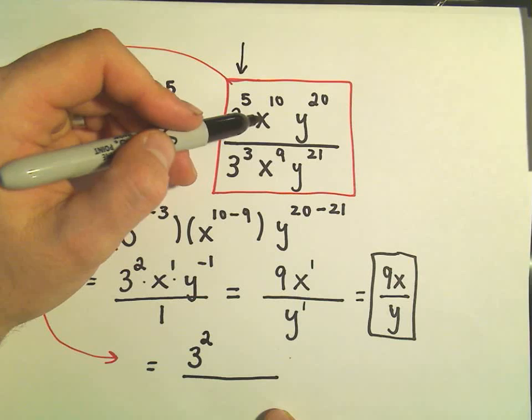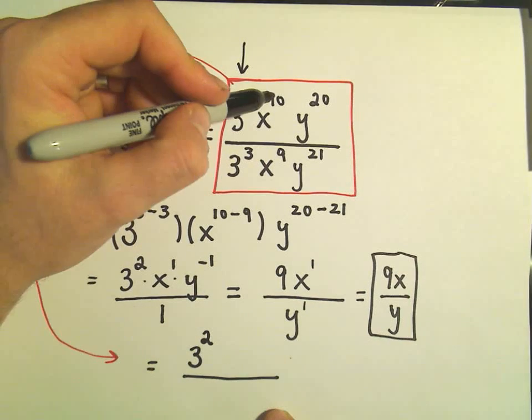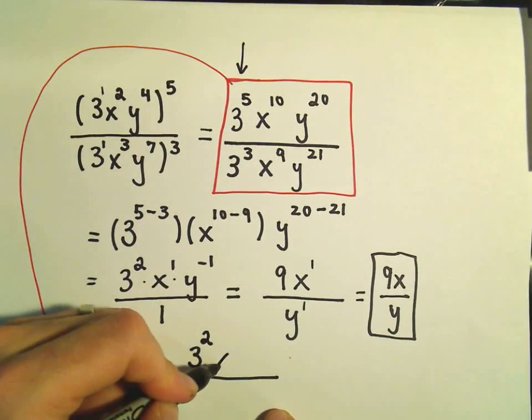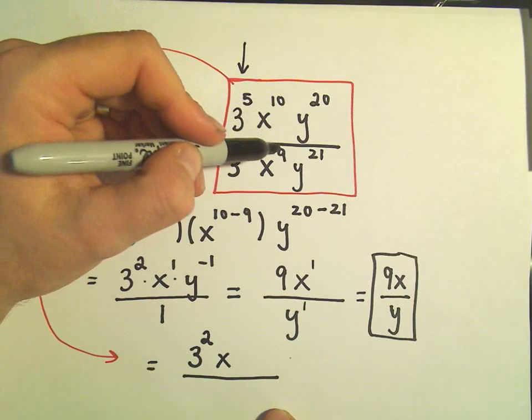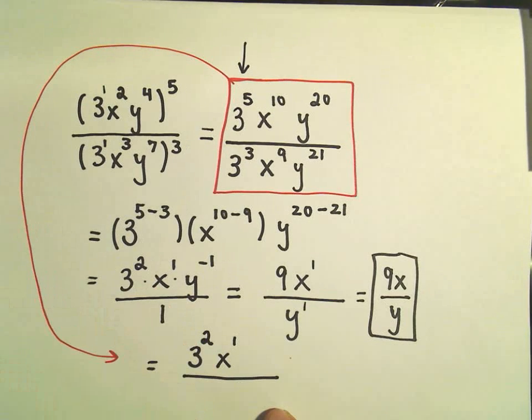Okay, likewise, we have x to the 10th over x to the 9th. Since the bigger exponent is on top, I know the x is going to stay on top of the fraction. And then I take the bigger number minus the smaller number. 10 minus 9 would be 1.